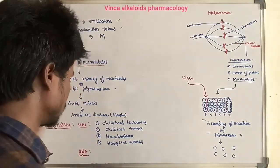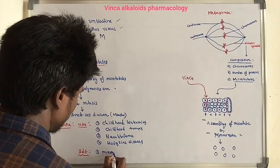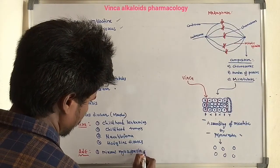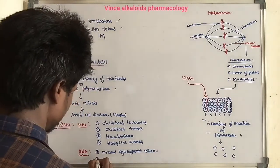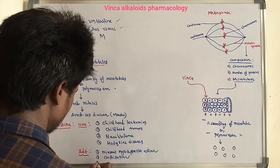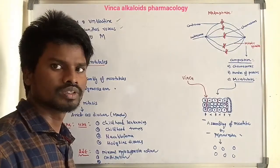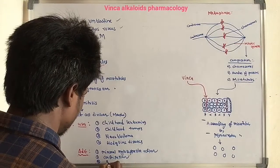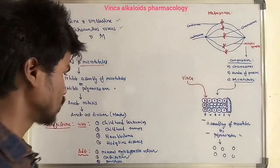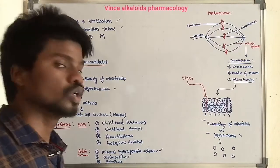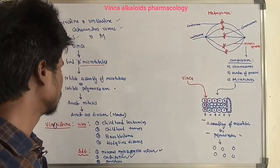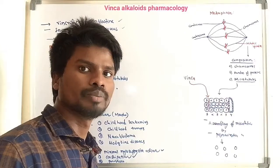The important adverse effects of Vincristine are: first, minimal myelosuppressive action; second, constipation; and third, peripheral neuritis with paresthesia. So to summarize: minimal myelosuppressive action, constipation, and paresthesia are the key adverse effects of Vincristine.